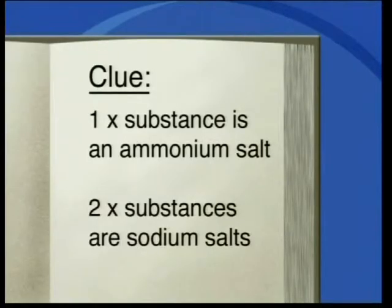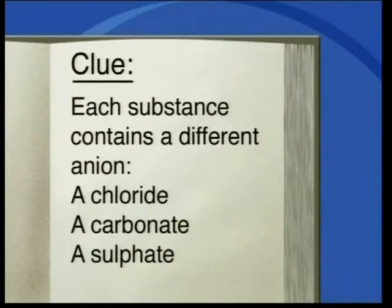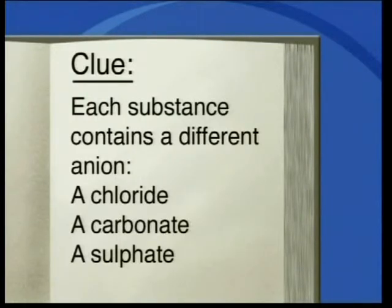The first clue is that one of these salts is an ammonium salt and the other two are sodium salts. The second clue is that each of the salts contains a different anion: a chloride, a carbonate and a sulfate.